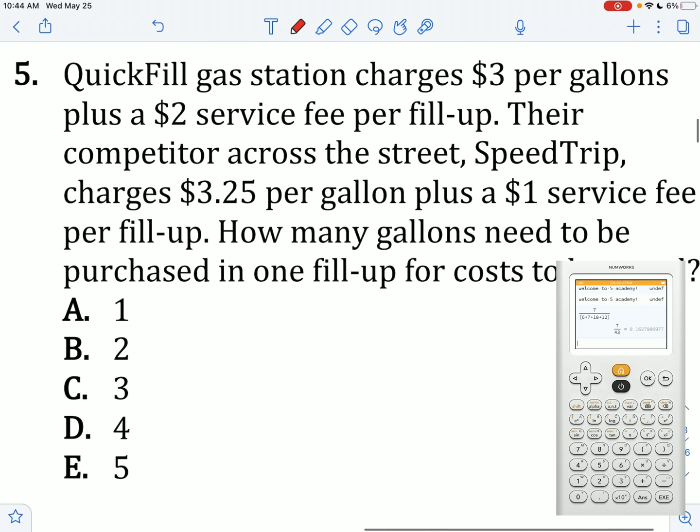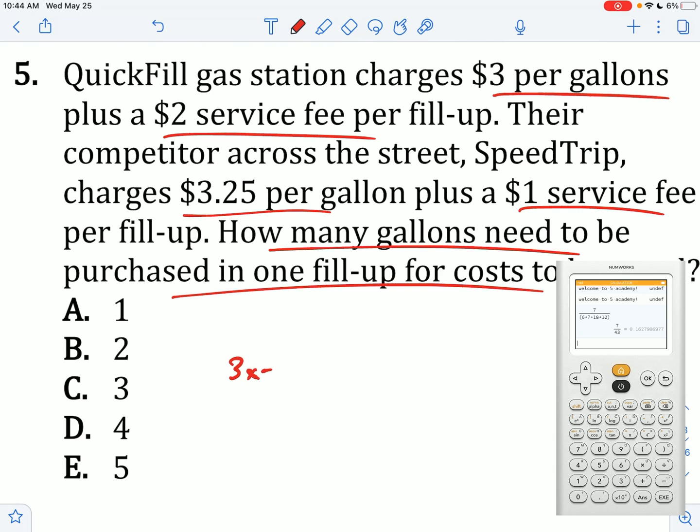Quick fill gas station charges $3 per gallon and a $2 fill-up service fee. Their competitor charges $3.25 per gallon plus a $1 service fee. After how many gallons would the two costs equal? So 3x plus 2 equals 3.25x plus 1. Subtract 3x on both sides, subtract 1 on both sides. We get 1 equals 0.25x. x has to equal 4.